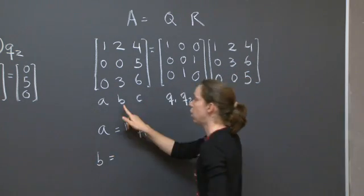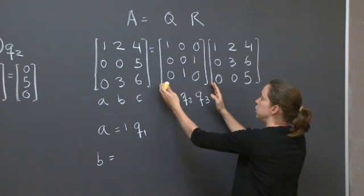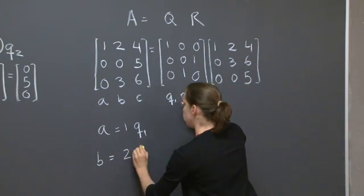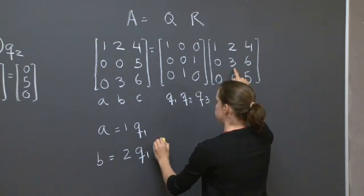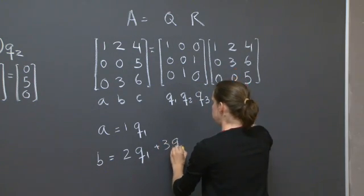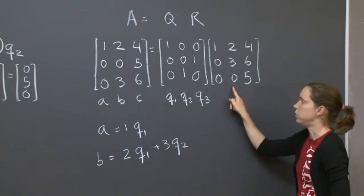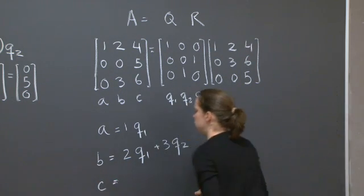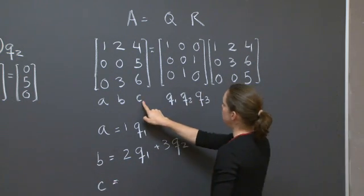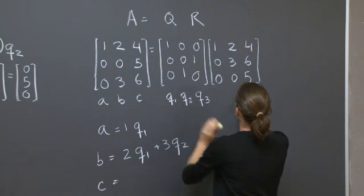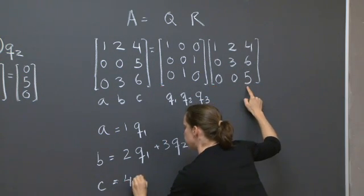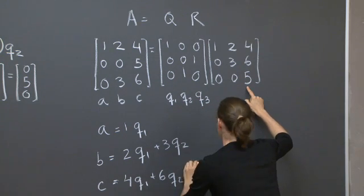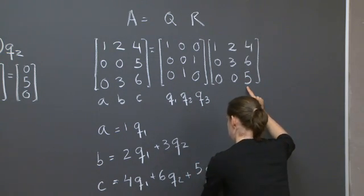Let's do it for b. The second column of this matrix will be Q times this column. So it will be 2 times Q1 plus 3 times Q2 plus 0 times Q3. And finally for c, I will have c is equal to this matrix times this vector. 4Q1 plus 6Q2 plus 5Q3.